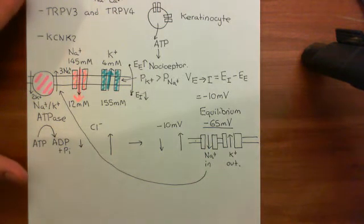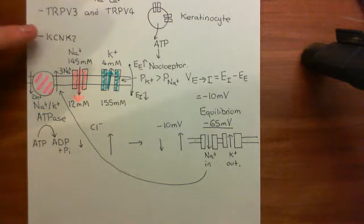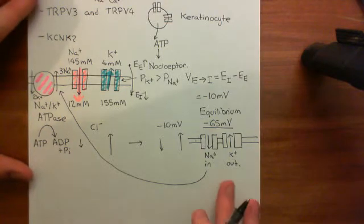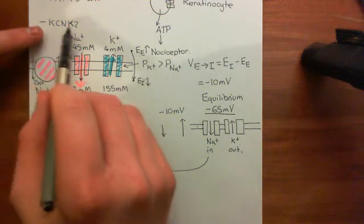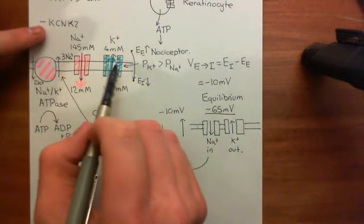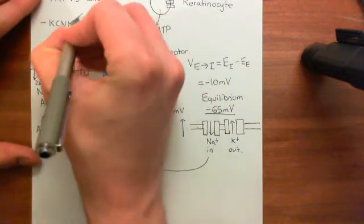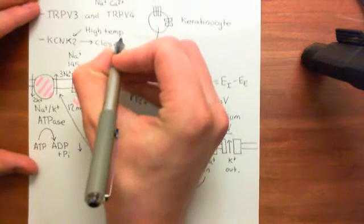Now we can discuss why the KCNK2 channel — a leaky potassium channel that is also sensitive to temperature — closing in response to high temperatures is going to trigger a depolarization of the electrical potential difference across the cell membrane of that axon terminal, leading to a receptor potential which then activates an action potential at the action potential origin of that nociceptor. Normally this KCNK2 channel is one of the leaky potassium channels, but in the presence of high temperature these will close — so they are a noxious heat nociceptor.